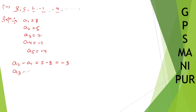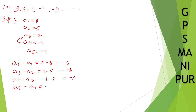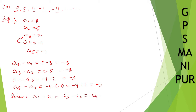Find a3 minus a2, which is 2 minus 5 = -3. Find a4 minus a3, which is -1 minus 2 = -3. And find a5 minus a4, which is -4 minus (-1) = -3. Since a2-a1 = a3-a2 = a4-a3 = a5-a4, the given sequence is an AP.